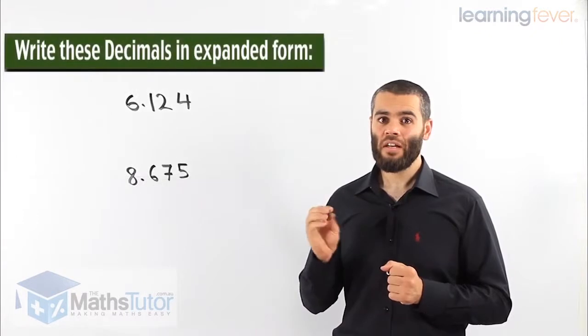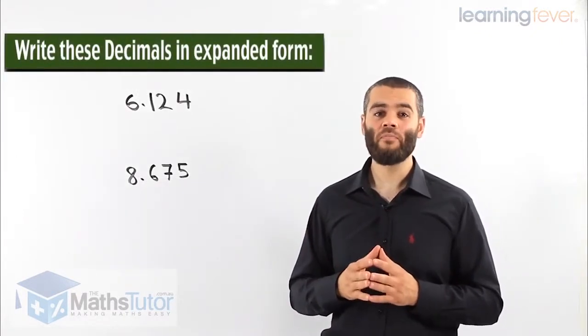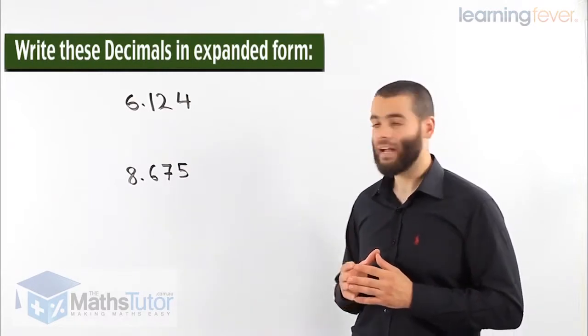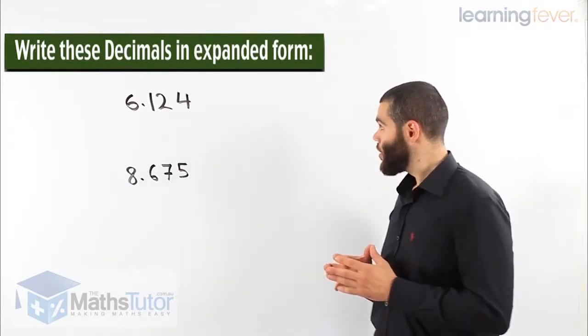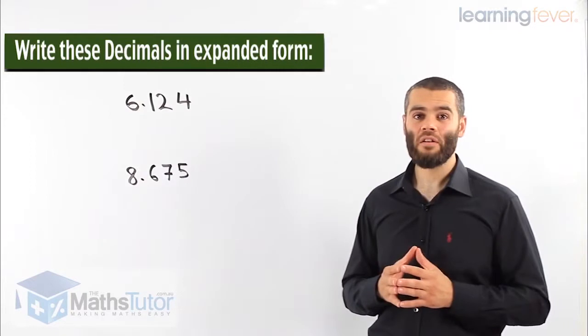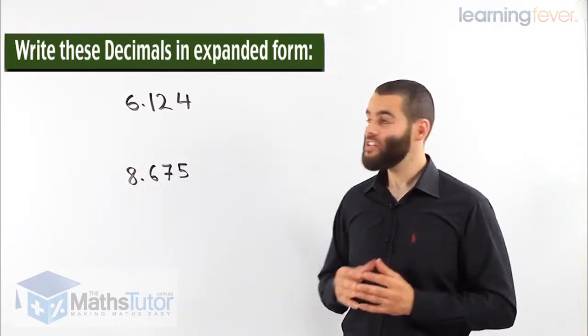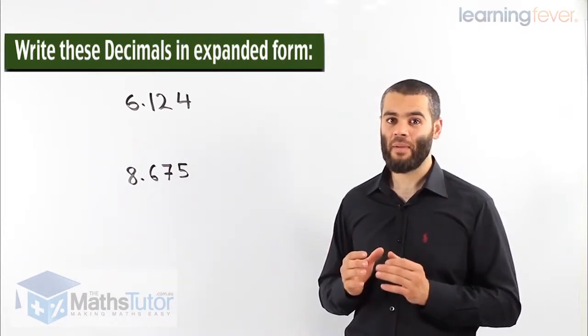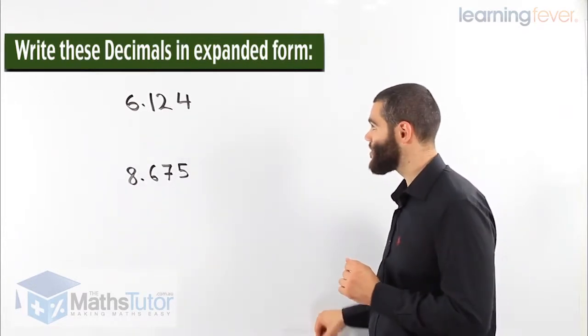Now, let's see how we write this decimal in expanded form using the examples I have there for you. We have 6.124. If we understand the place values, we'll be easily able to write it down in expanded form. Let's see how it actually works.